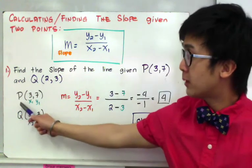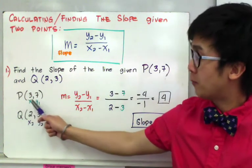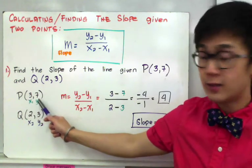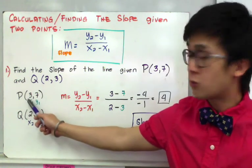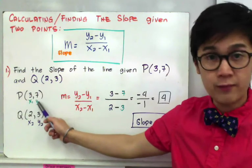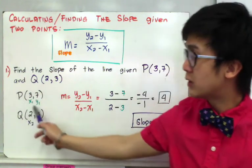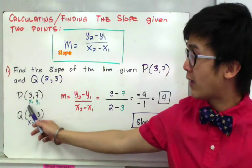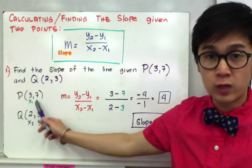So for our point P, we have pairs of 3 and 7, so our x will be 3 and y will be 7. Since this is our first set of points, we'll have x sub 1 for 3 and y sub 1 for 7.